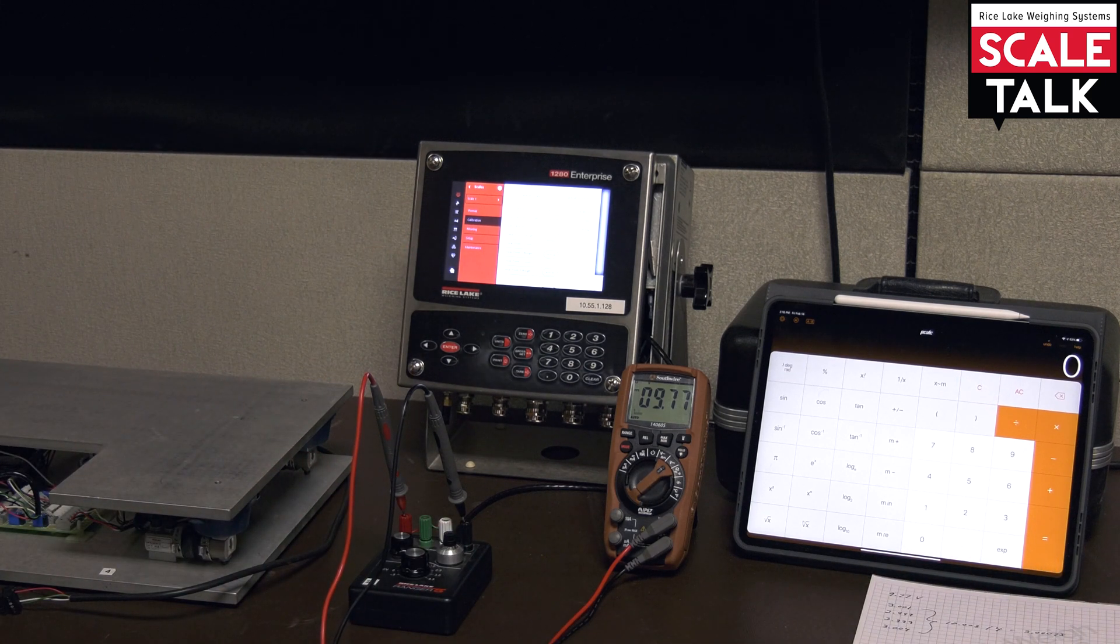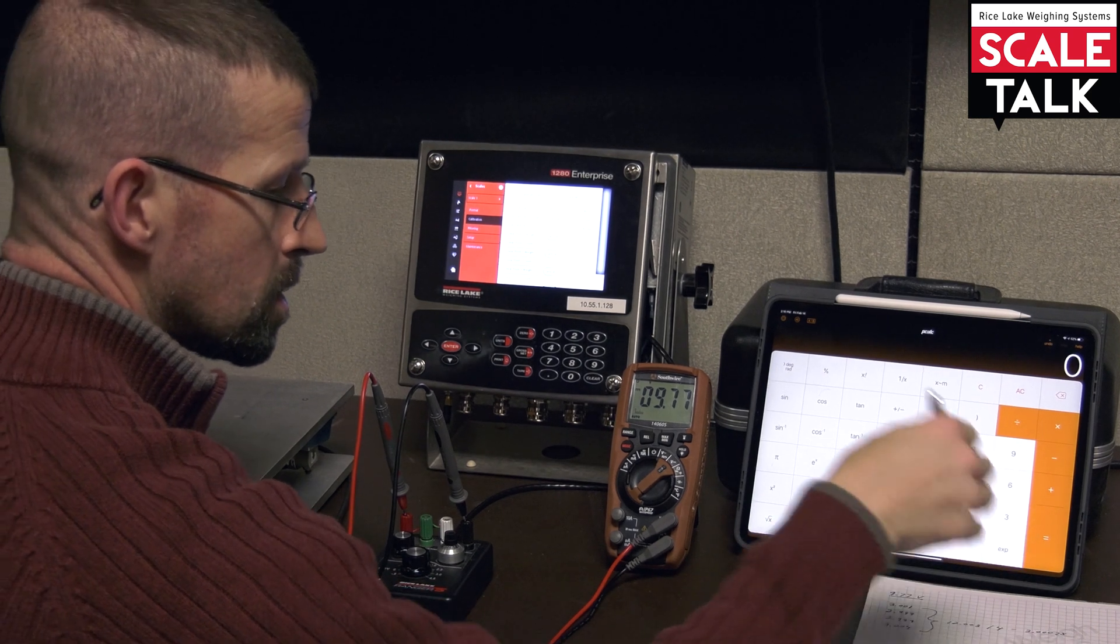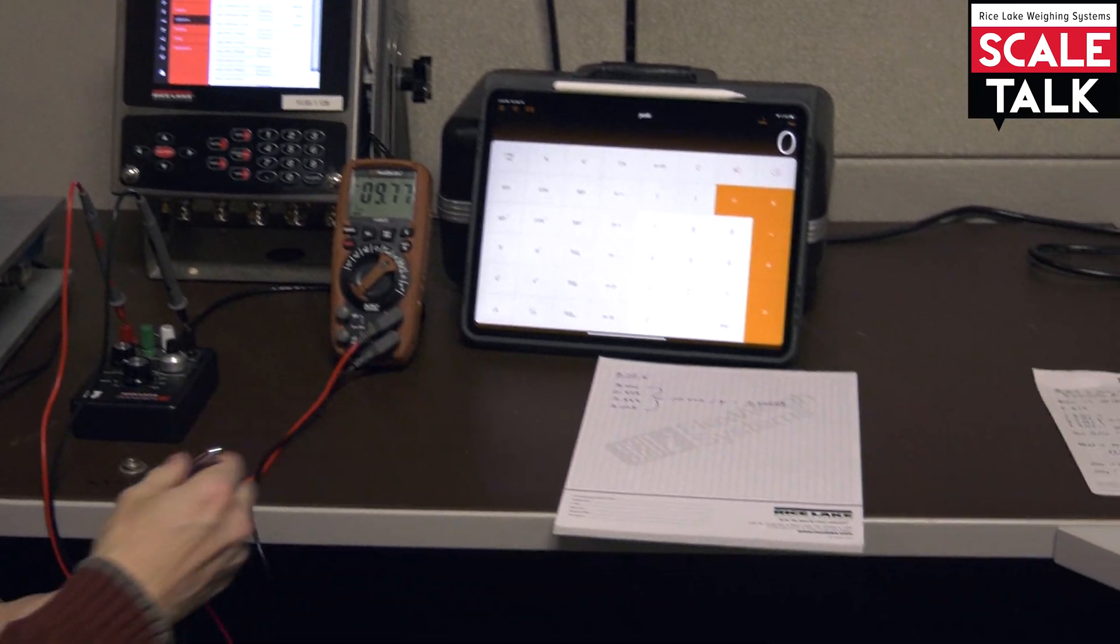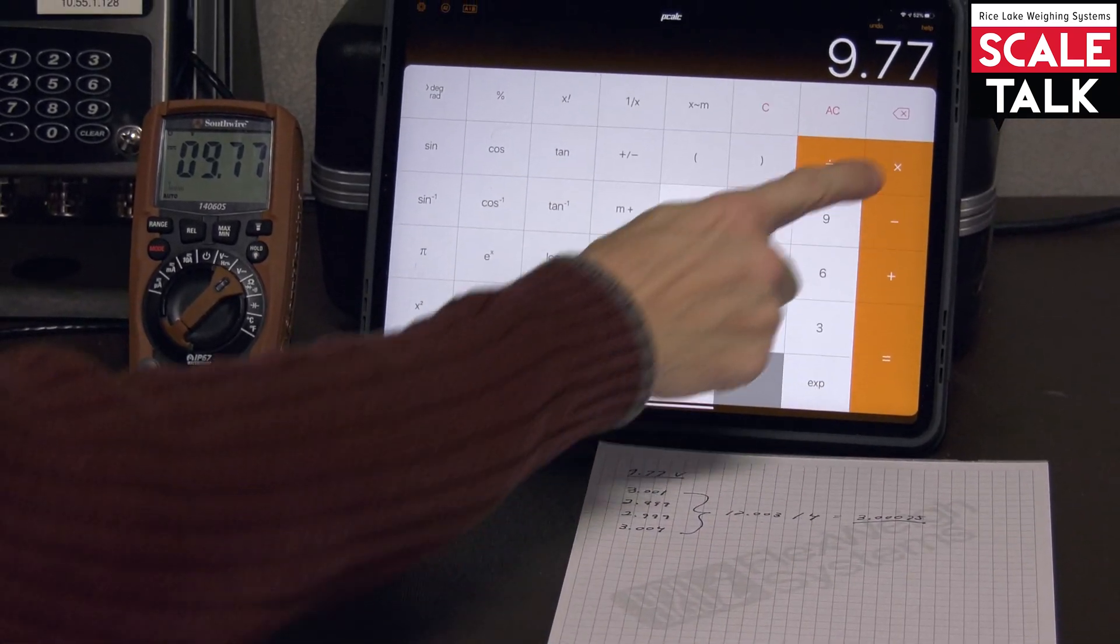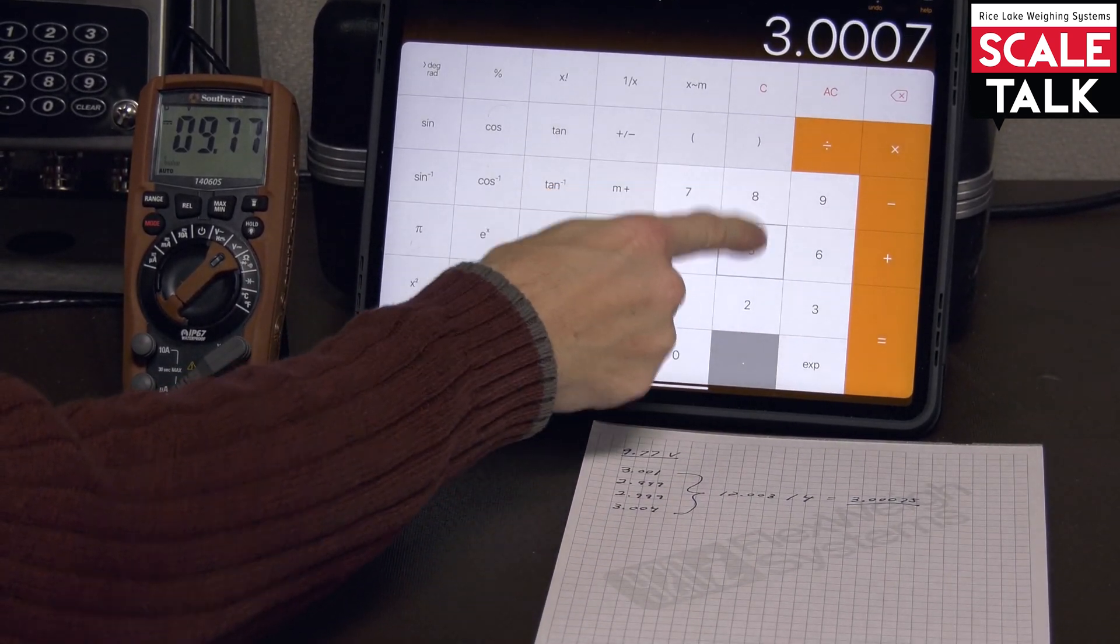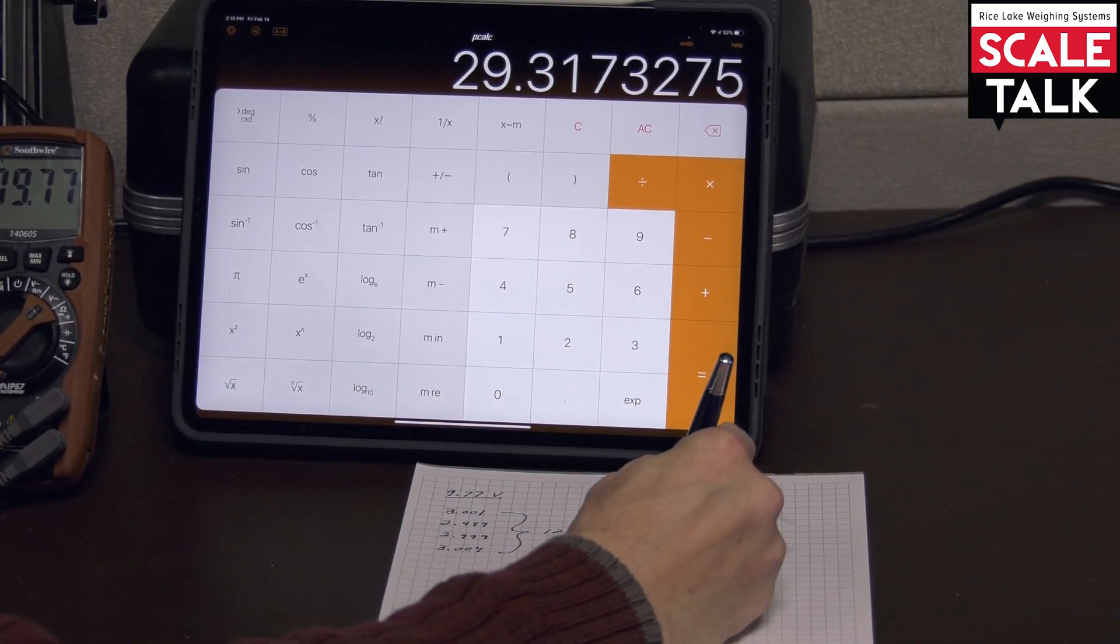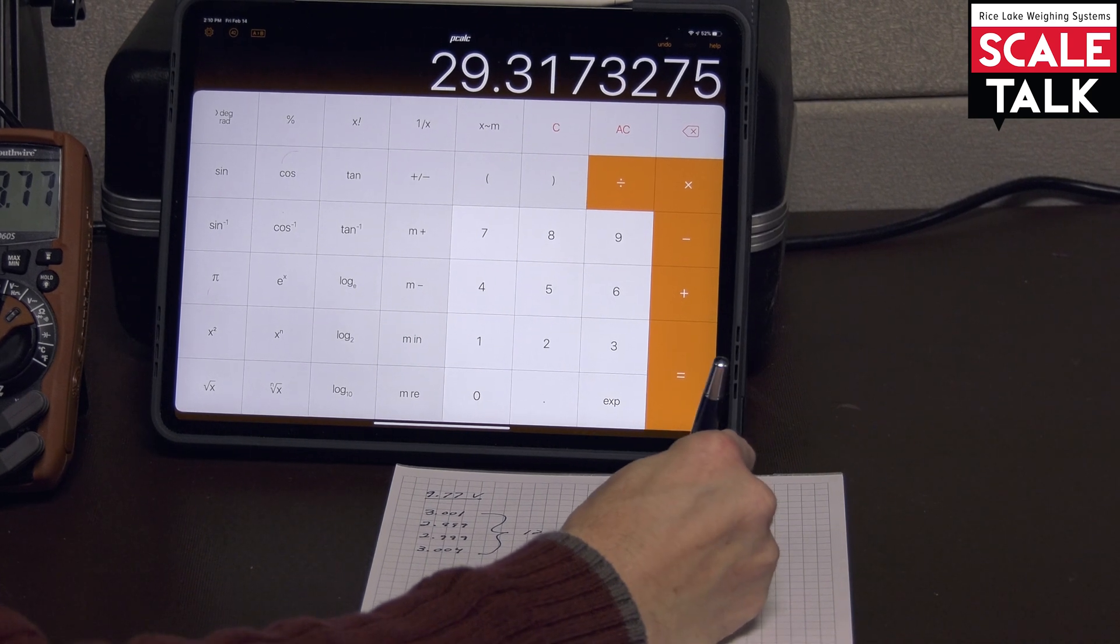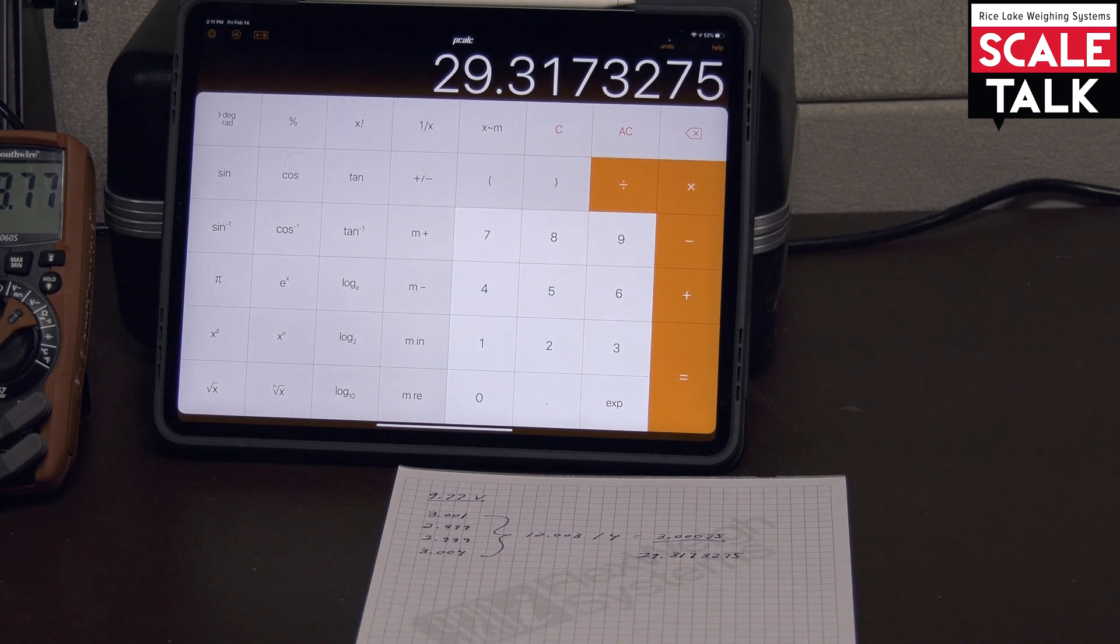Now to determine what the full scale capacity is of the system we would need to take the product of these two numbers here, my excitation and my average. So let's take a look at that. If we do 9.77 and multiply that by our 3.00075, that gives me a value of 29.3173275. I'll just write all those numbers down.